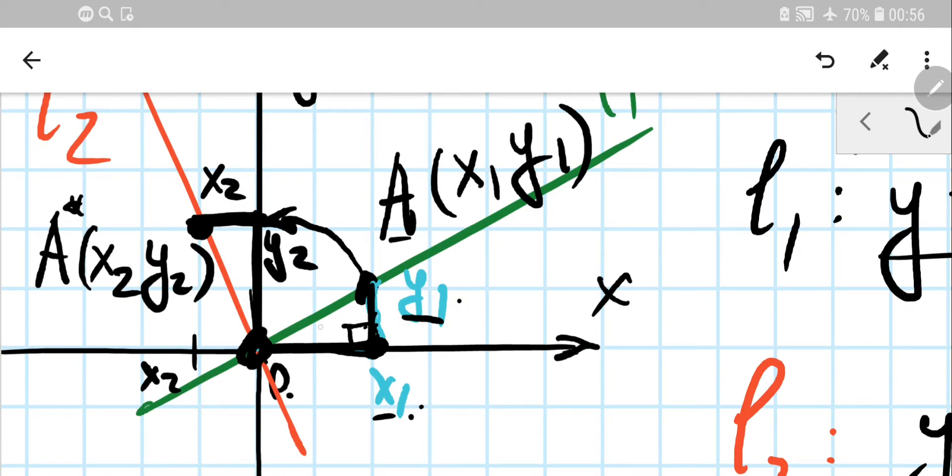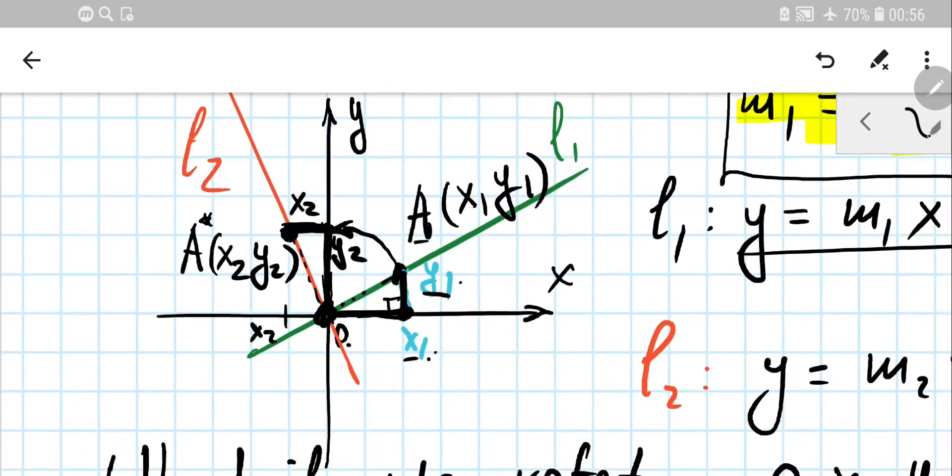Or just remember how you rotate a right-angle triangle. This is the hypotenuse, it becomes this red one. This leg becomes that leg, vertical one. And the vertical leg becomes the horizontal leg. Now I guess you remember that from rotation or transformation theory.